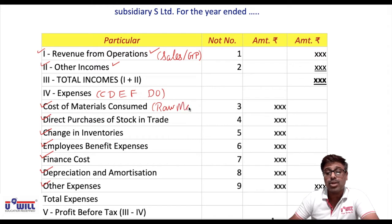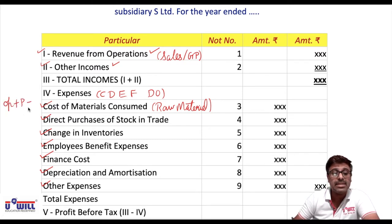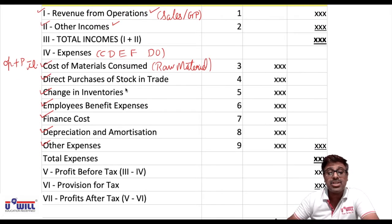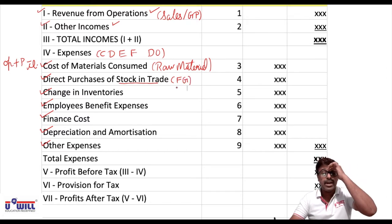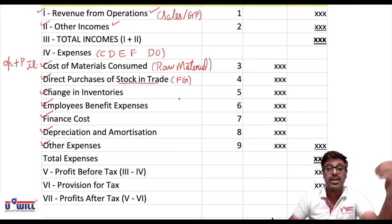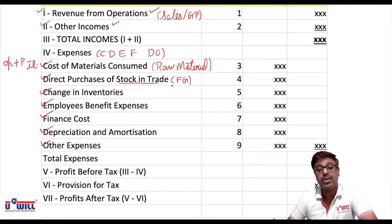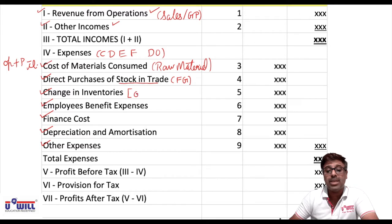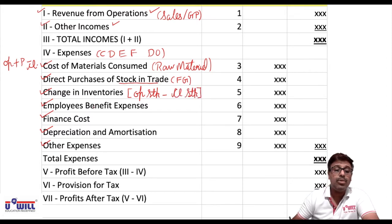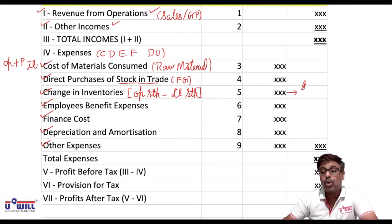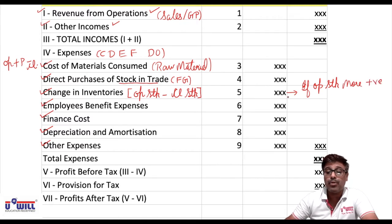Cost of material consumed means cost of raw material consumed: opening stock plus purchases minus closing stock. Direct purchases of stock in trade means purchases of finished goods - if you are a trading unit, not a manufacturing unit, you directly buy finished goods. Change in inventories means the difference between opening stock and closing stock. If opening stock is more than closing stock, record it as a positive amount.